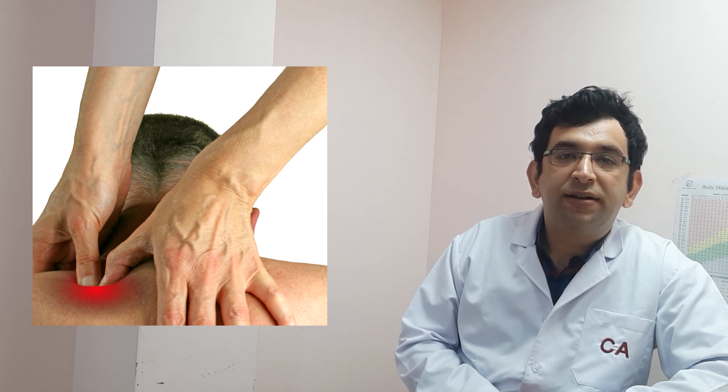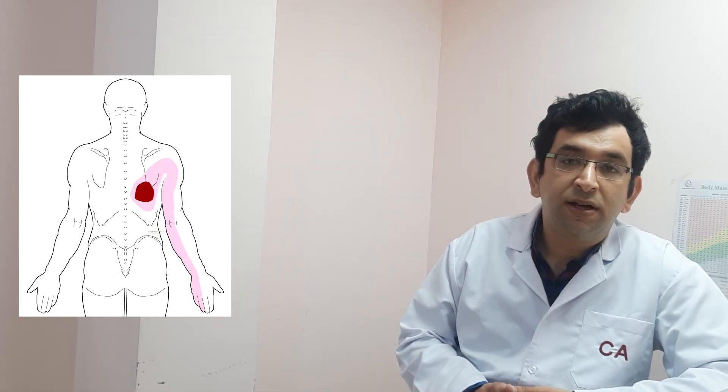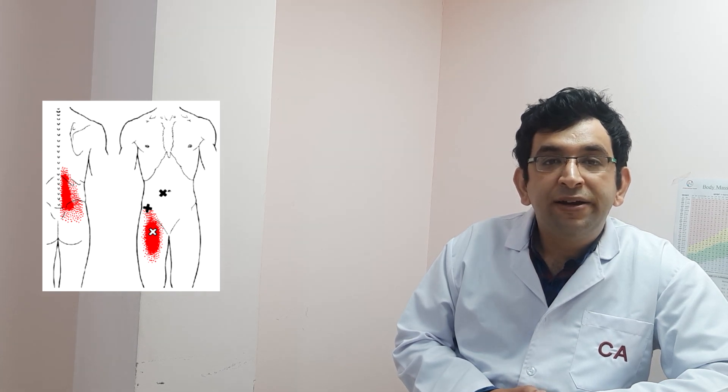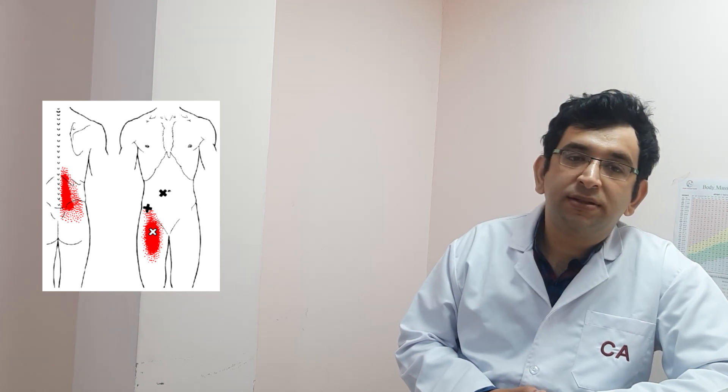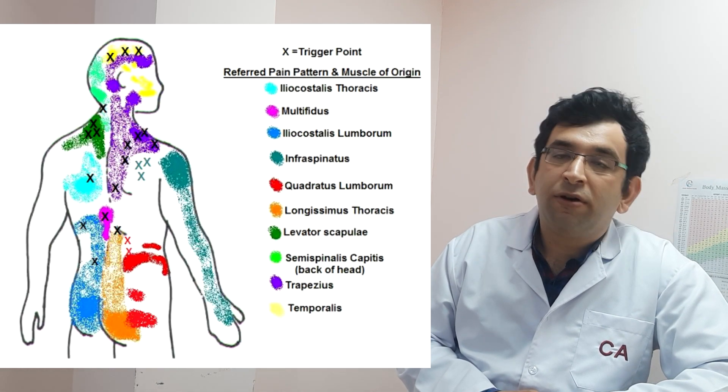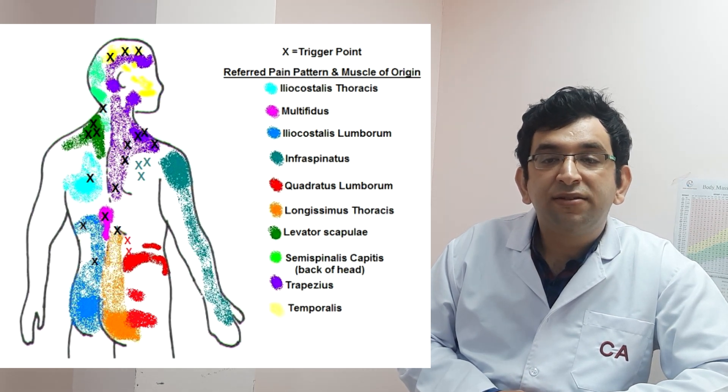Trigger points may not be painful other than with direct pressure. Only when pressure is applied directly over the point do they refer pain elsewhere — to adjacent or remote areas. The origin of the pain and the area where it manifests can be different. For example, low back pain can be related to a trigger point in the abdominal muscles, while headaches can be related to a trigger point in the neck muscles. This referred pain is a characteristic feature of trigger points and forms the basis of its name, since it relates to one area triggering pain elsewhere.